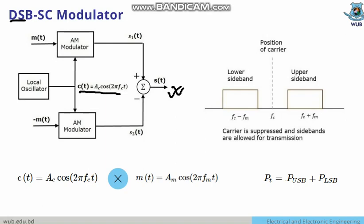DSBSC stands for double sideband suppressed carrier — a single carrier is used but suppressed. In the frequency spectrum, the carrier position is shown as a dotted line (suppressed), while the lower sideband and upper sideband are both allowed for transmission. CT is the carrier signal and MT is the modulating signal.